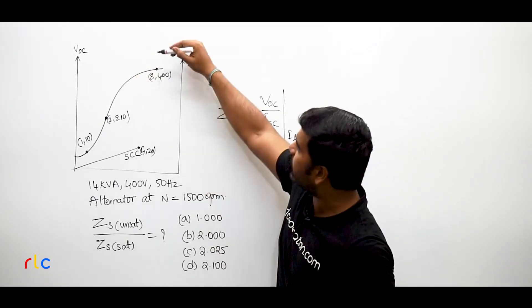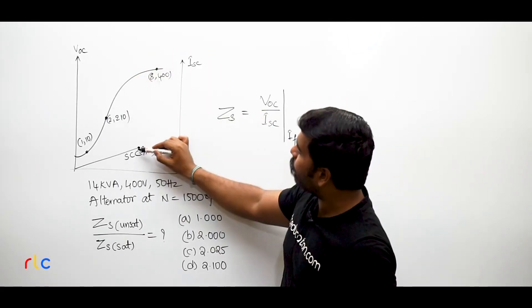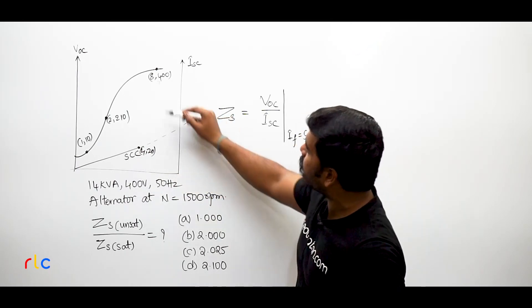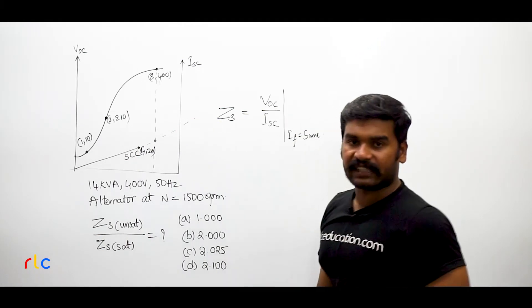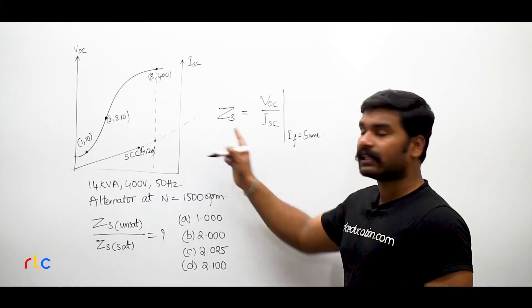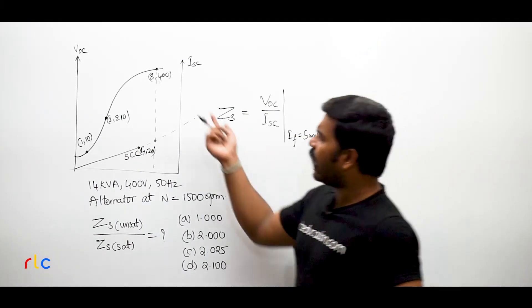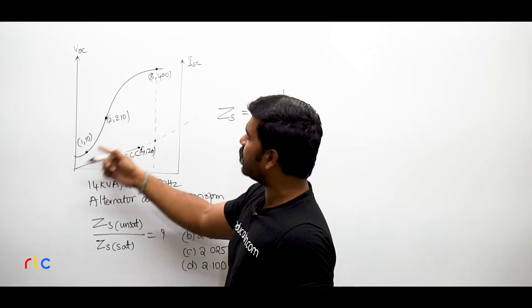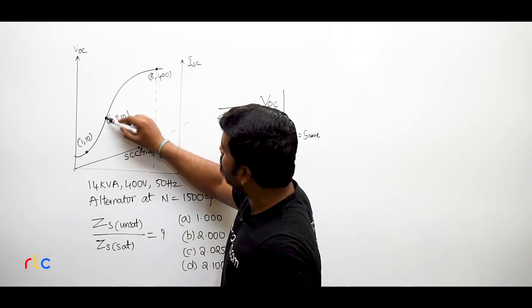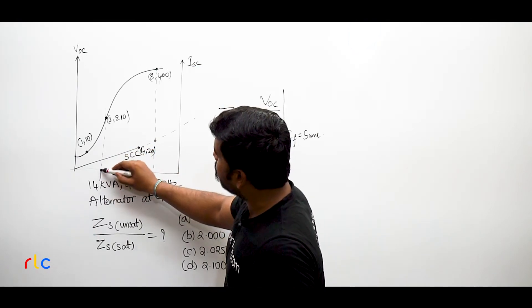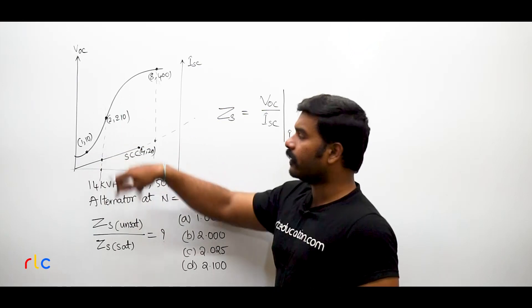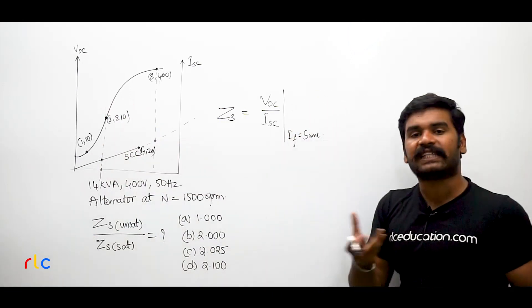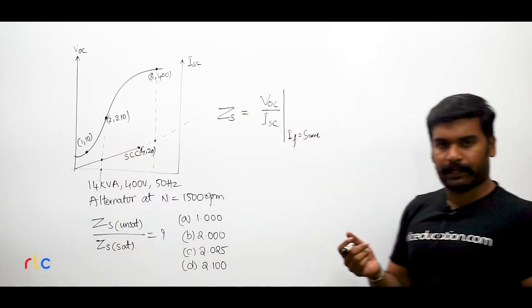So if you are going to take the voltage VOC here and if you are going to extend this SCC characteristic at the same field current here, if you are going to take the ISC, that value of ZS is going to be a saturated one. Otherwise, if you are taking anywhere in between this unsaturated region here, let us say I am taking here VOC and at the same IF I am taking some ISC here, then that ZS is going to be what? My unsaturated synchronous impedance, understood?